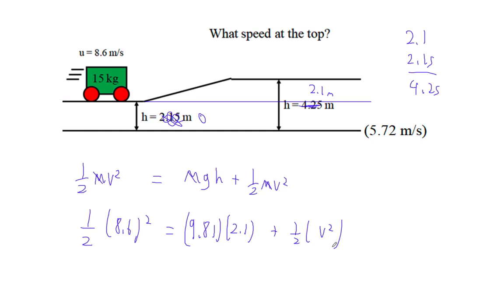And then I get 16.379 is 1 half v squared. So I did this minus this, and I got this.